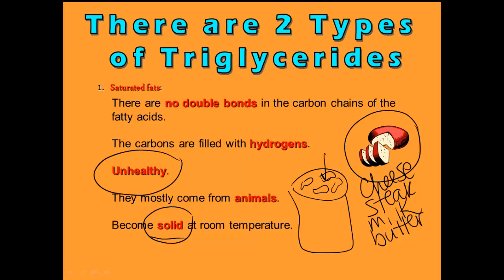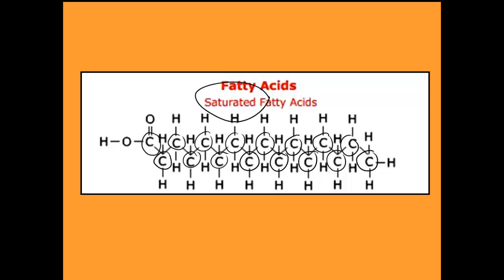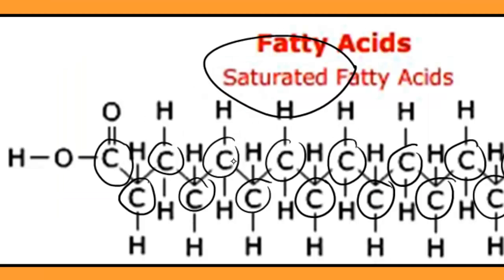So how do you recognize a saturated fat when you're looking at it in the molecular form? It has no double bonds. Here's an example of a saturated fatty acid. If you look, it's got many carbons in the whole chain — one, two, three, four, five... 16. So this is a 16-carbon chain. The way that you know that it's saturated is that all of those carbons are completely filled up, completely saturated with hydrogen. A carbon can attach to four things and make four connections — this carbon is attached to four things.